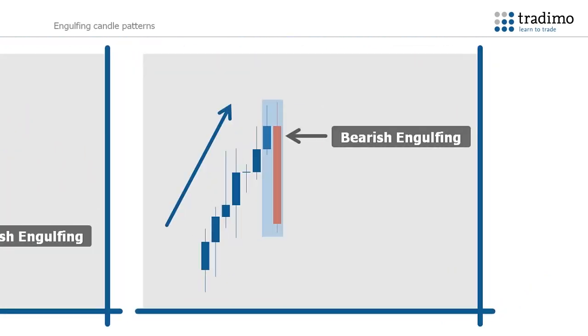Secondly, the body of the first candle must be smaller than the body of the second candle. It is not necessary for the second body to engulf the actual wick of the first candlestick, although this does create an even stronger signal when it does.